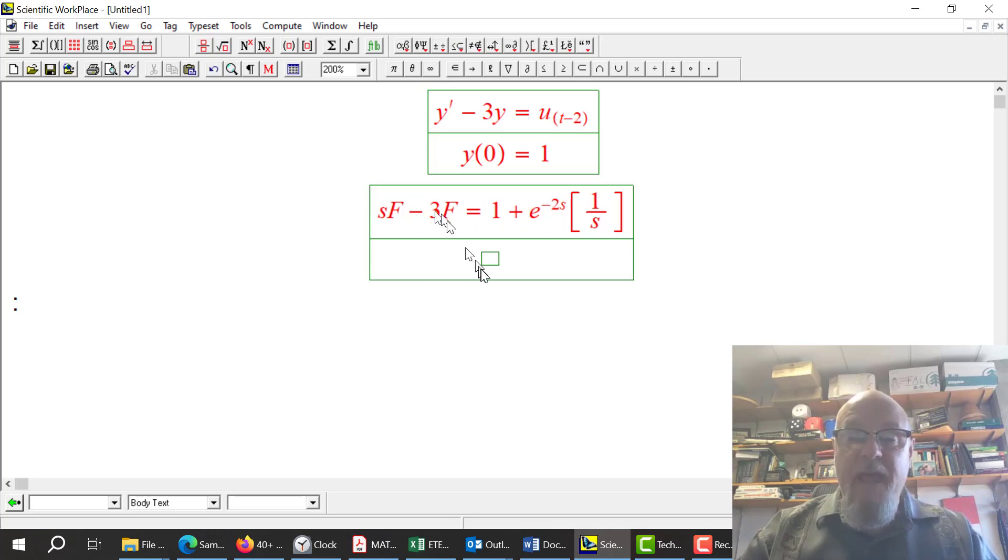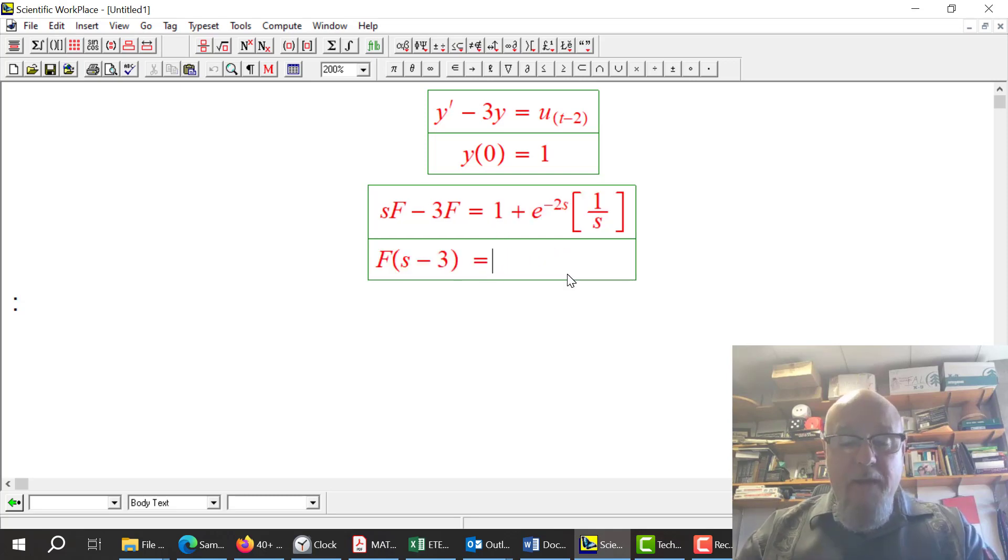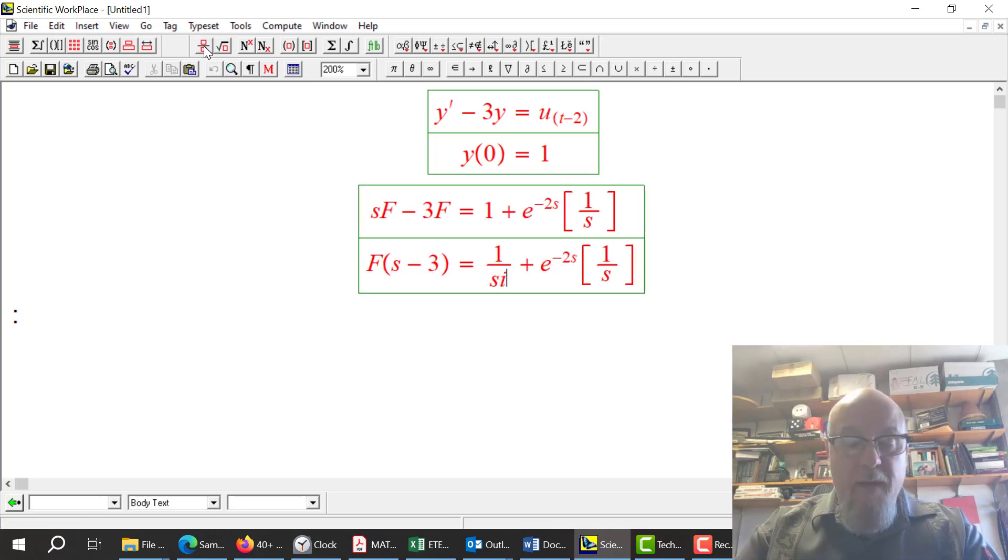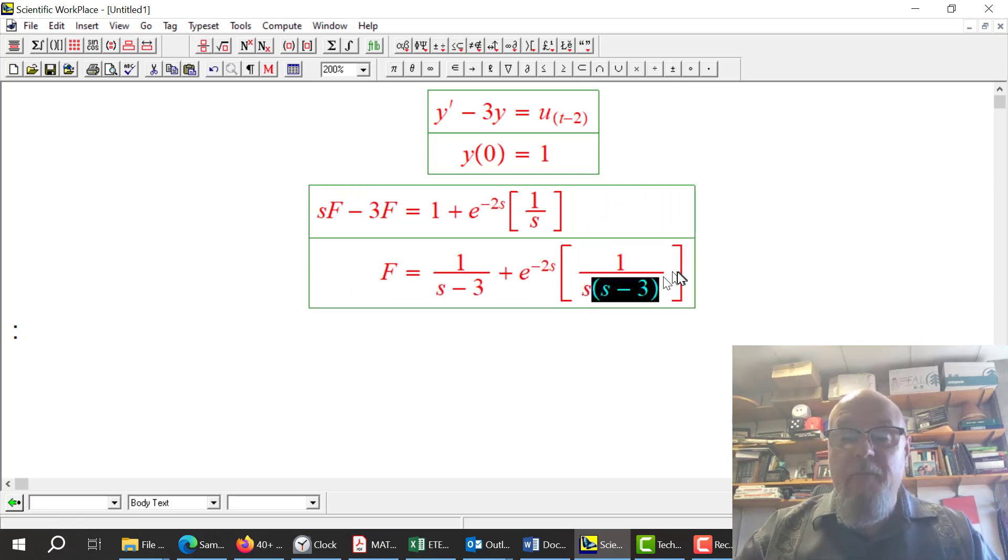Everything left has an f on it, so I'm going to factor out that f. So it's f times s minus 3 equals. Now I can divide both sides by the bracket s minus 3. So that 1 divided by s minus 3. So now I've solved for f.